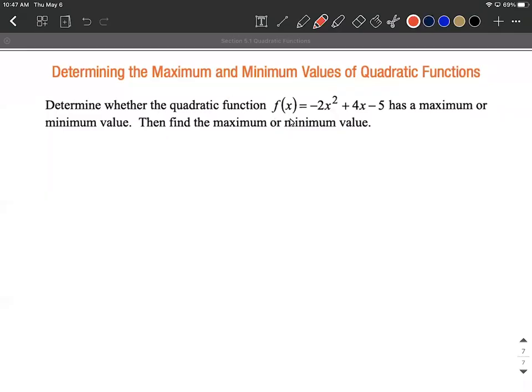Given a quadratic function, let's talk about finding a maximum or minimum value. The first thing to note is the function f(x) = -2x² + 4x - 5 is in descending order.